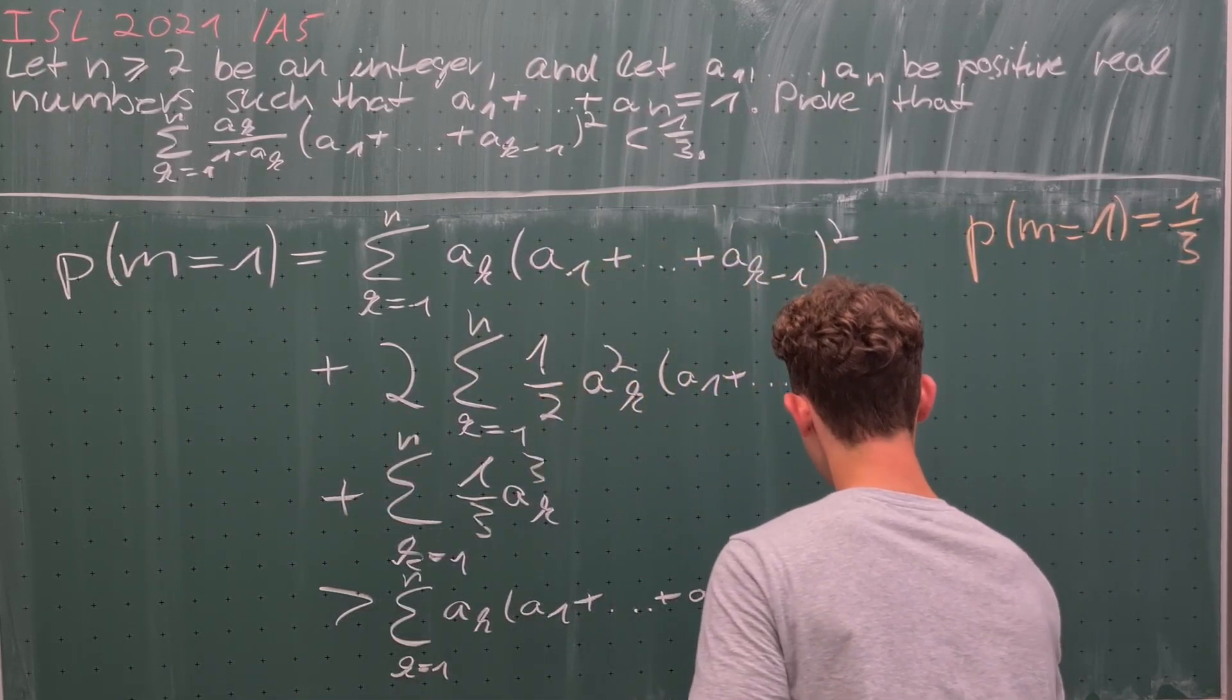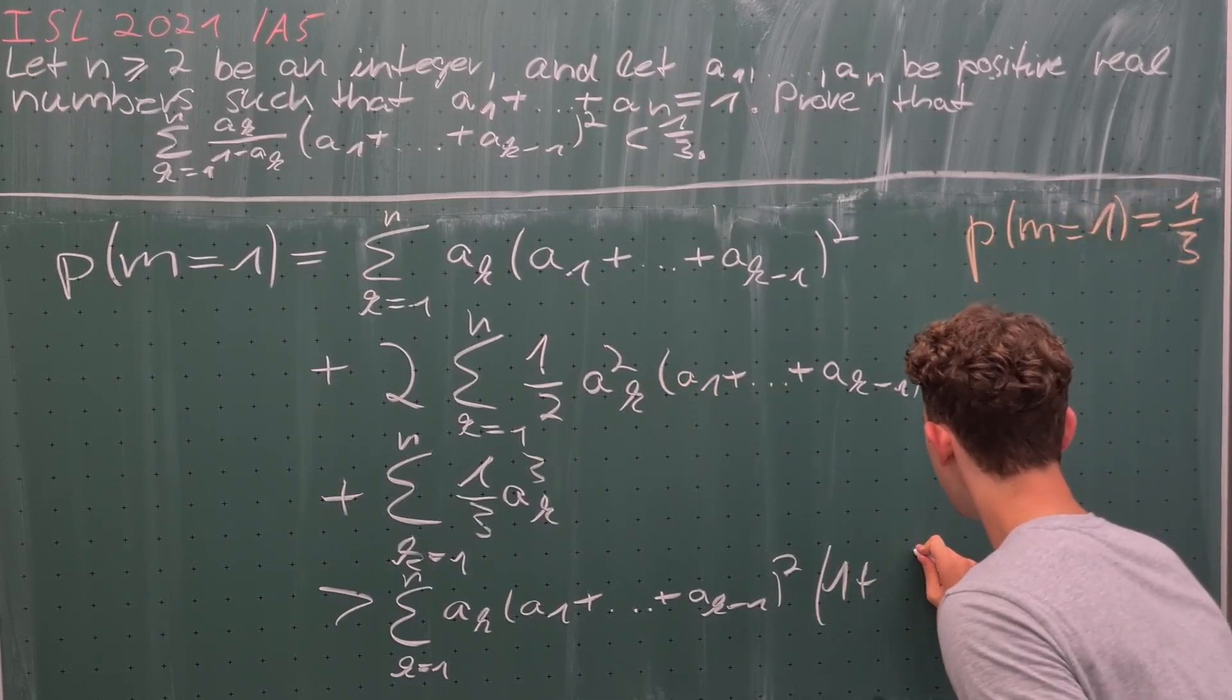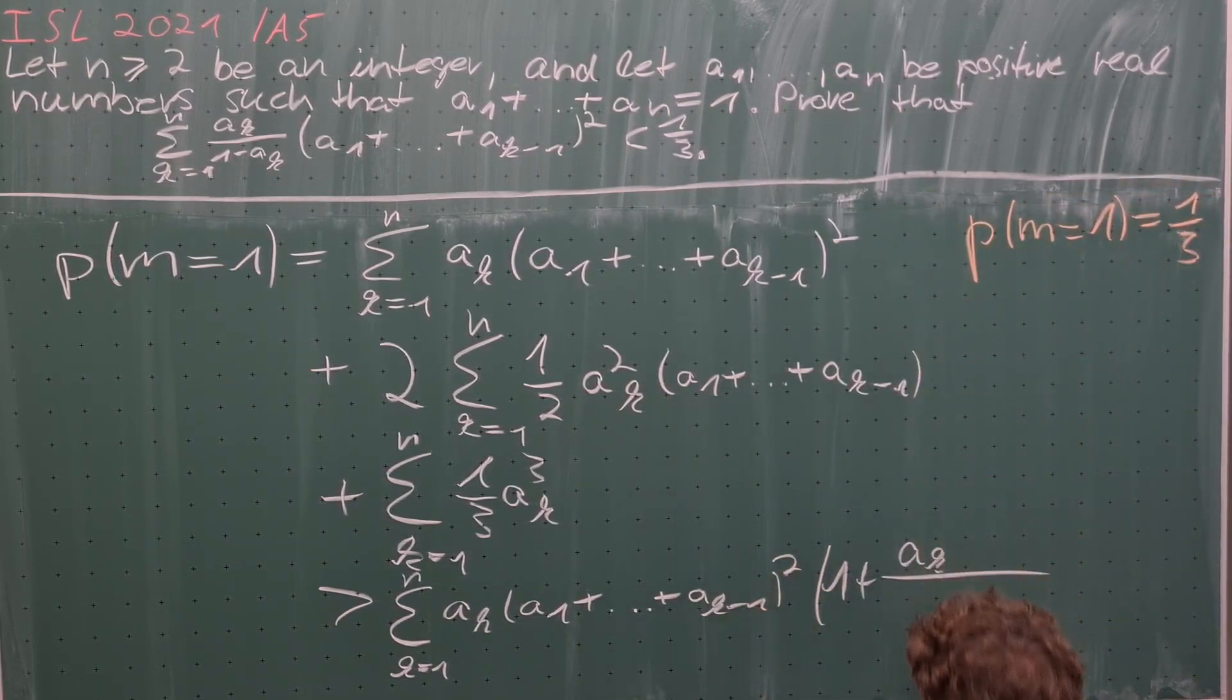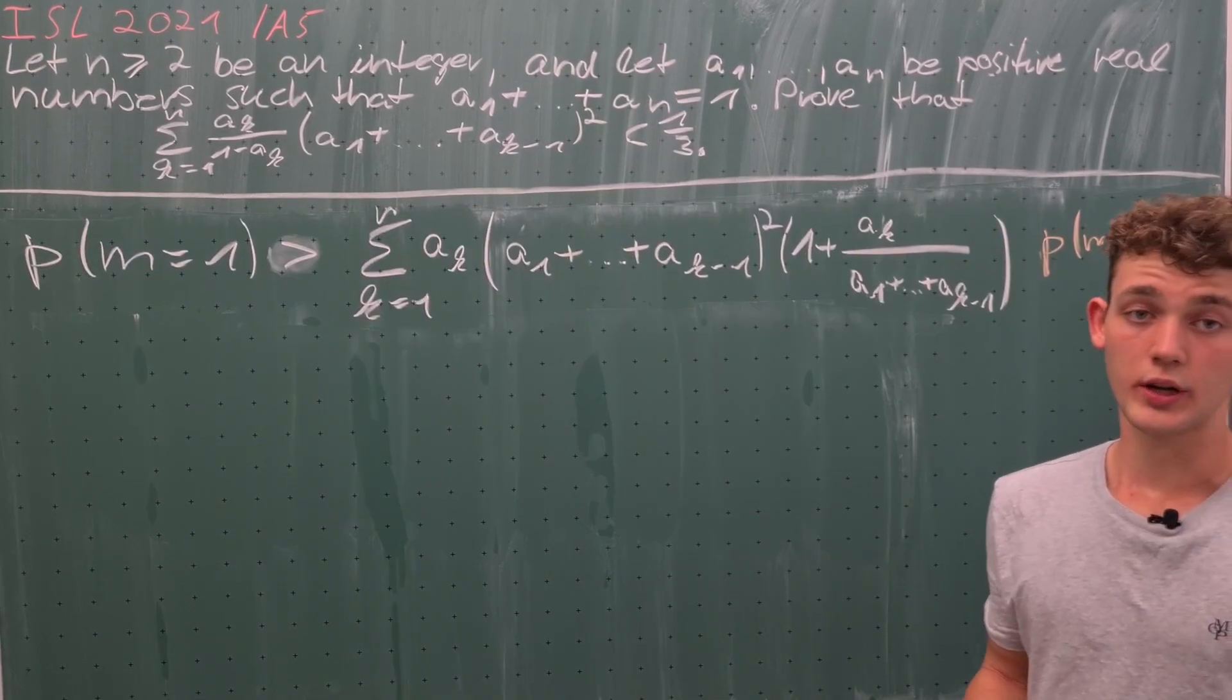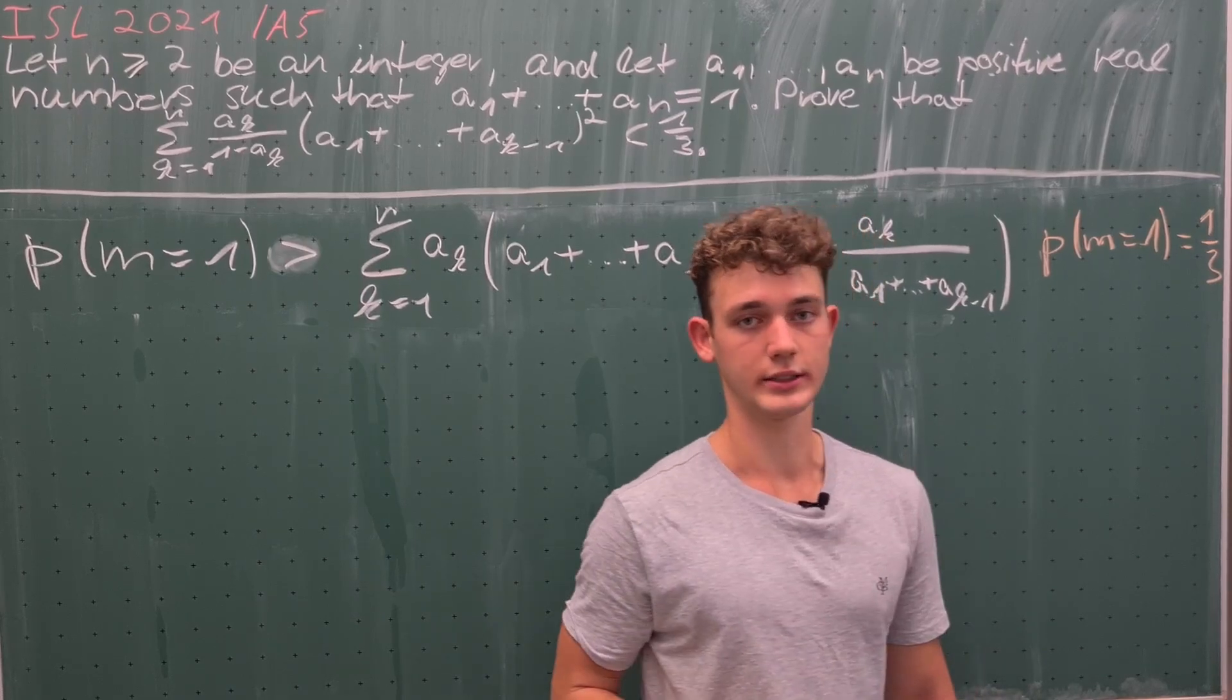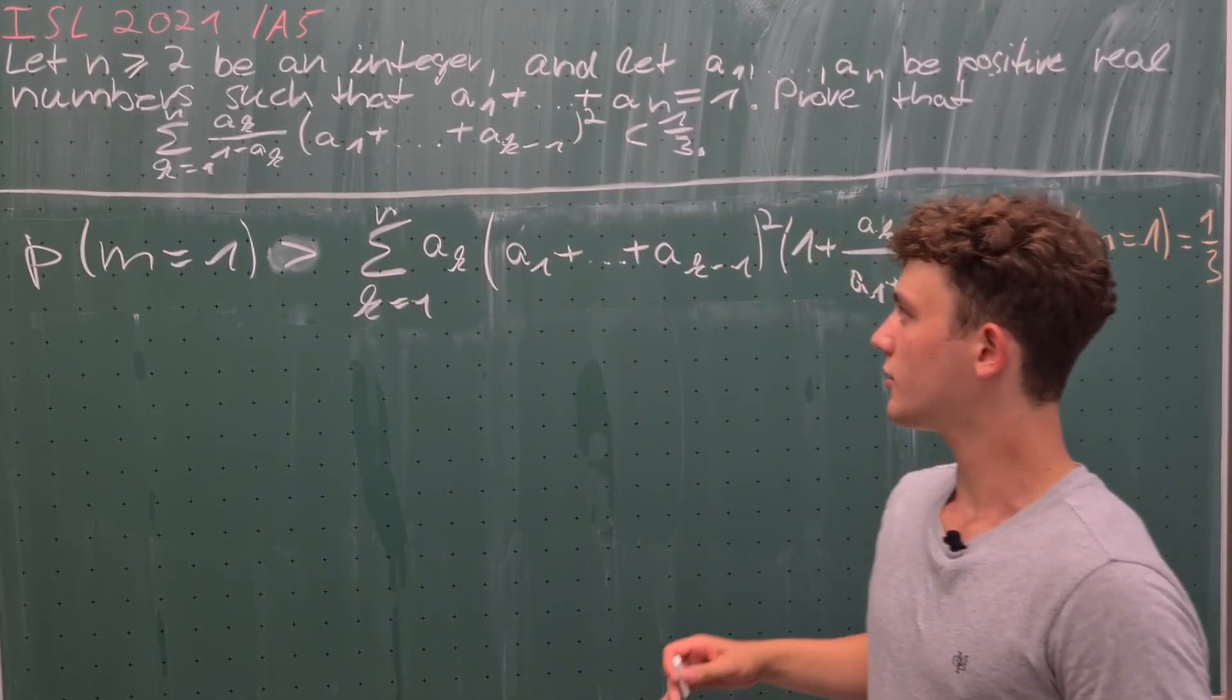If we factor out this sum, we get, or rather this term inside of each summand, we get this sum multiplied with 1 for this case plus a_k divided by this sum. So what we need to do now is to prove that this is still not less than this, and we'll be done.